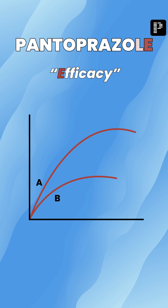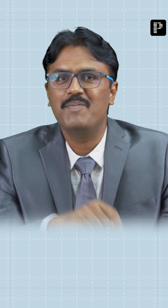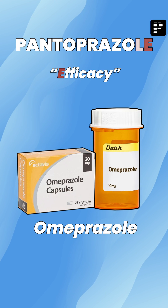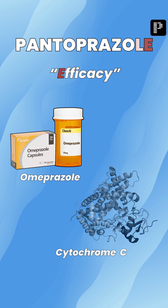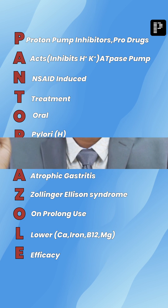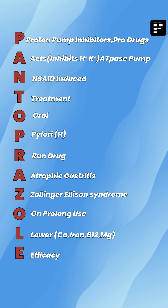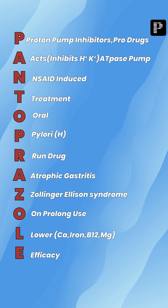The last letter is E — efficacy. Among all the drugs used in peptic acid disease, PPIs have maximum efficacy. Regarding enzyme inhibition, one drug you have to remember is omeprazole — it inhibits an enzyme called cytochrome CYP2C19, which is why it has an interaction with clopidogrel.